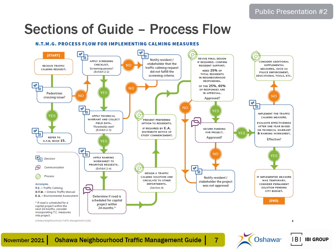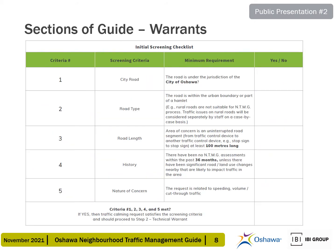The study team has developed an overall process flow for how traffic calming requests will be addressed. Once a traffic calming request is received, it will go through the steps illustrated on the slide to determine if it is eligible for traffic calming measures. The study team has created multiple warrants in the draft guide to help validate and prioritize requests. The warrant shown here is the initial screening checklist, which will help city staff determine if the request can be addressed through neighborhood traffic management. Screening criteria include road jurisdiction, road type, road length, history of prior assessments, and the nature of the traffic concern.